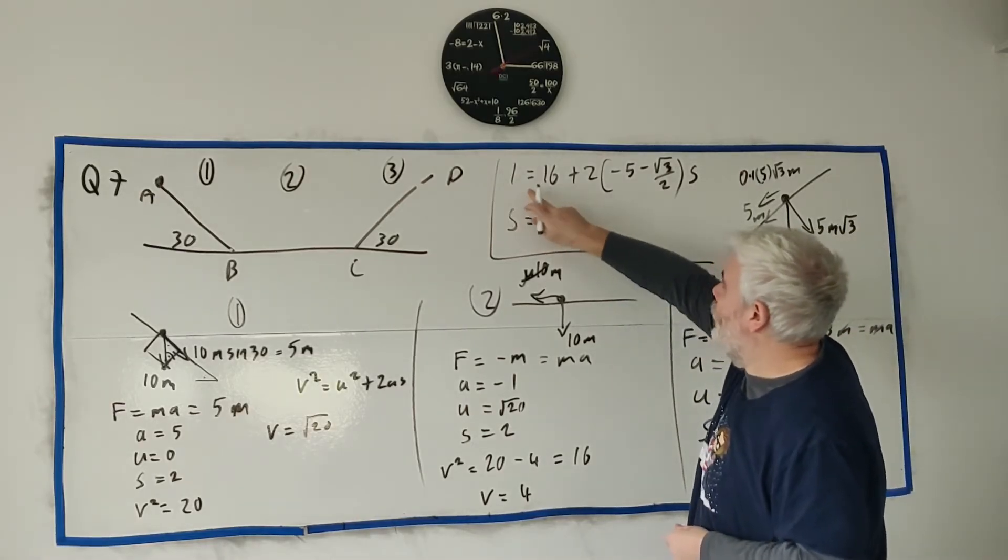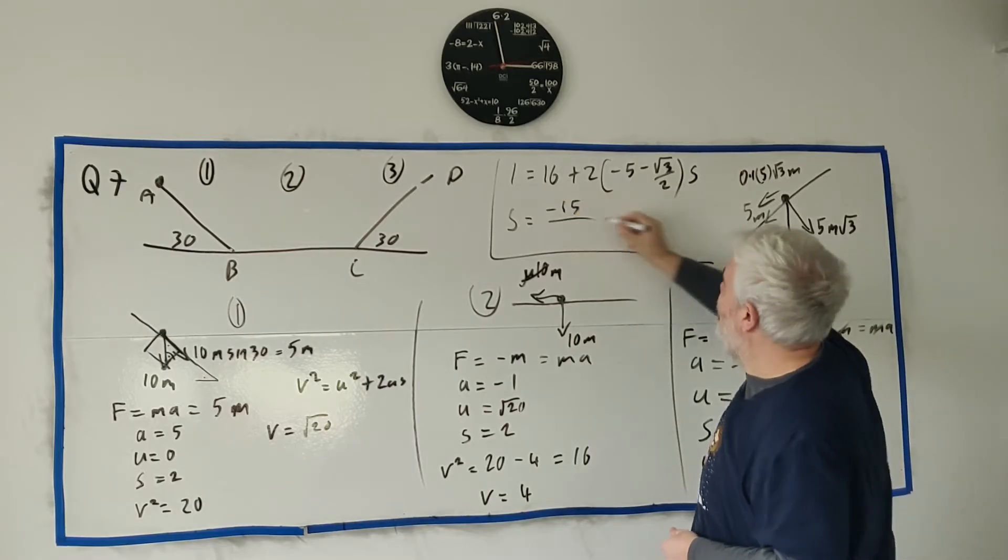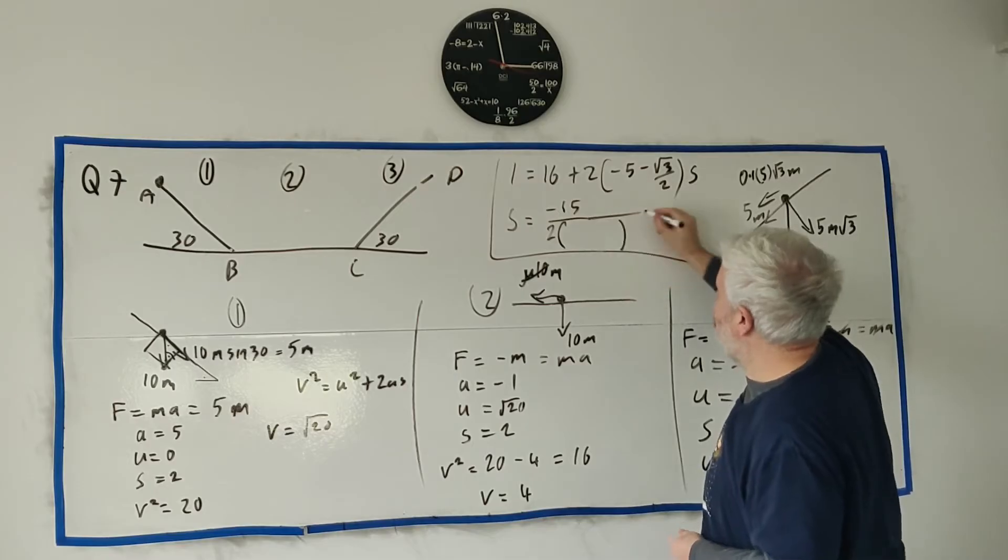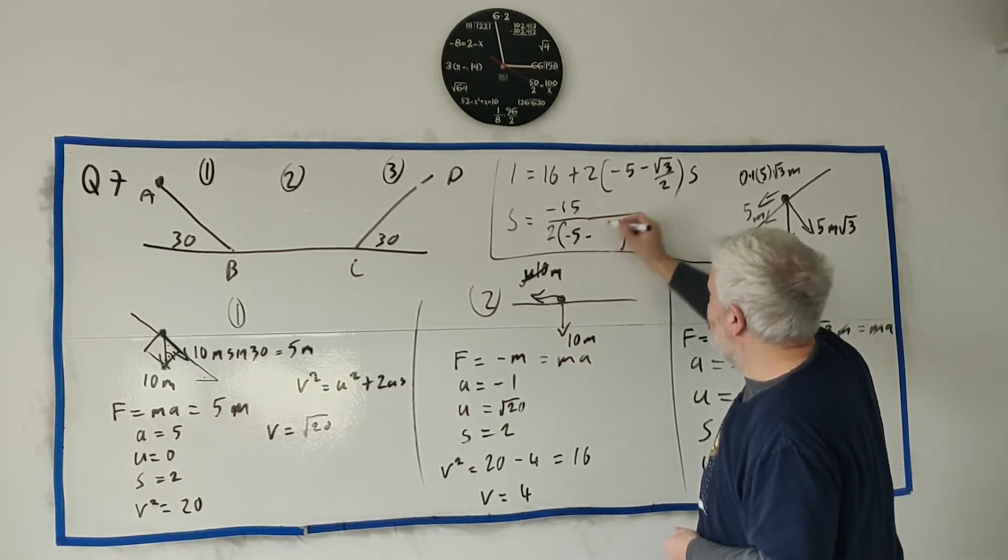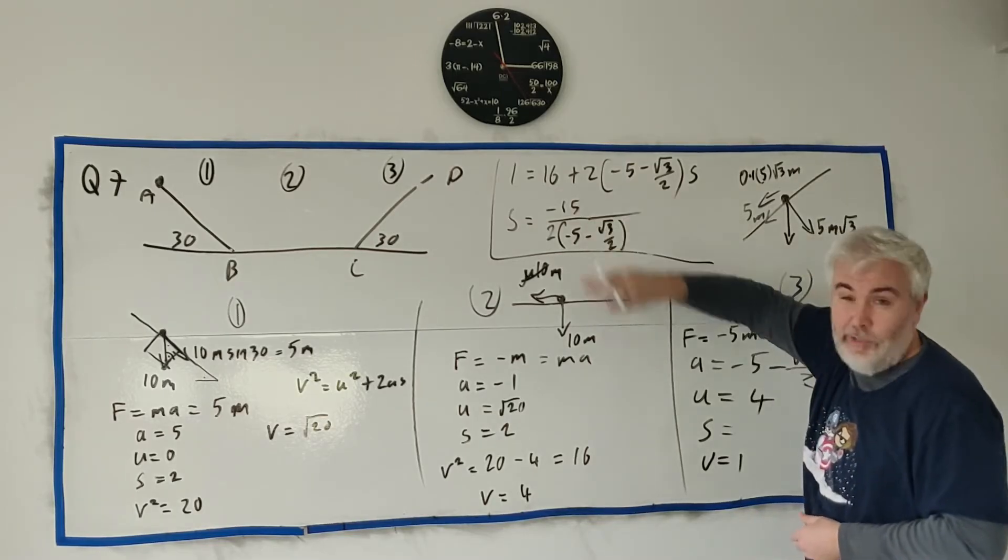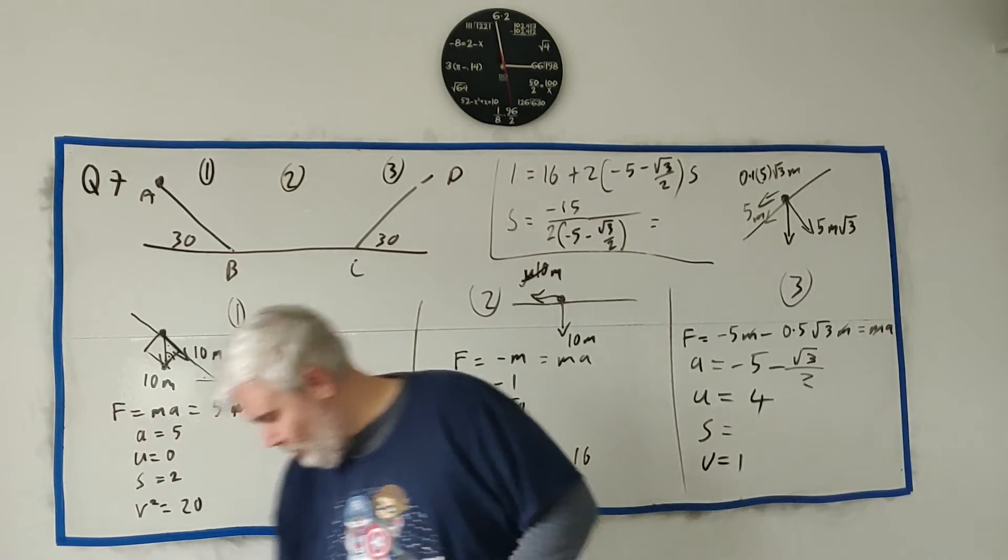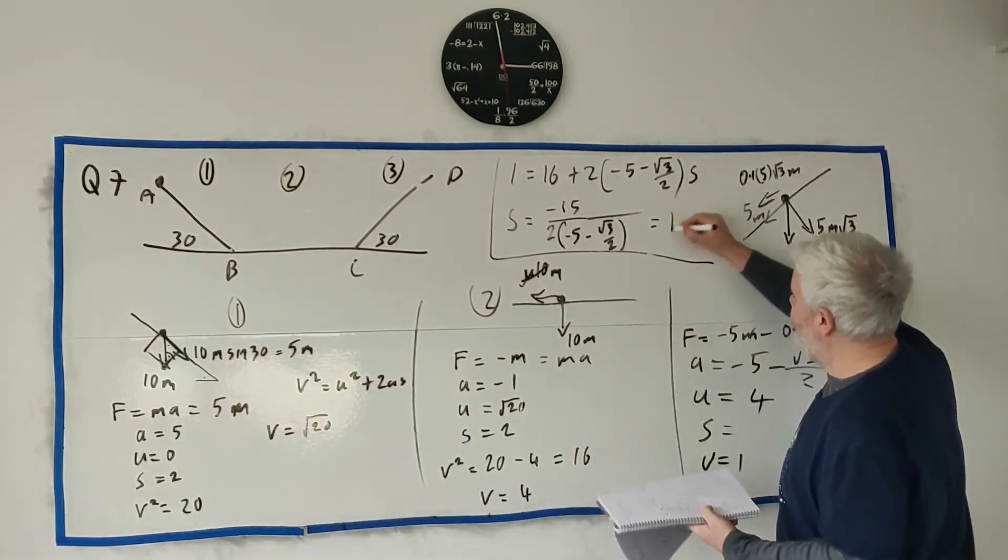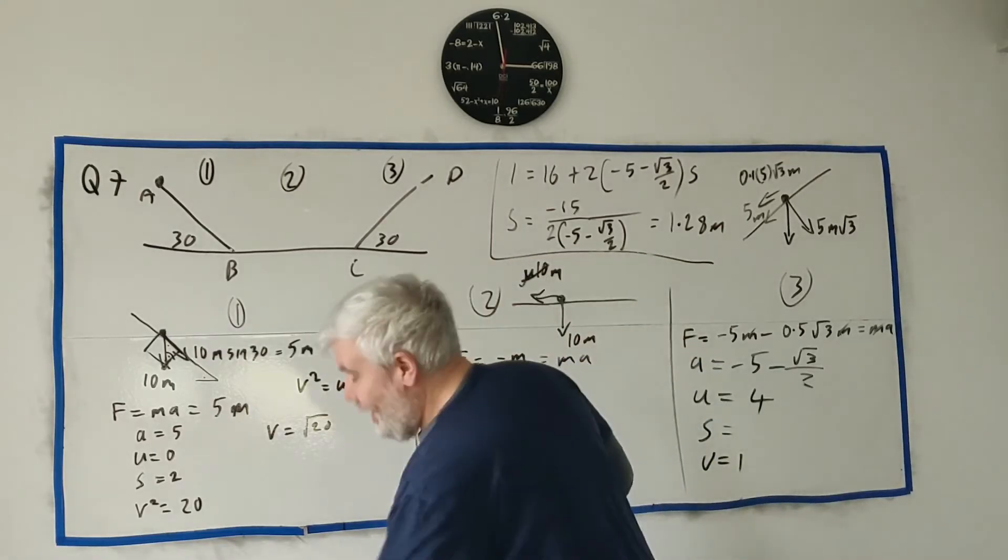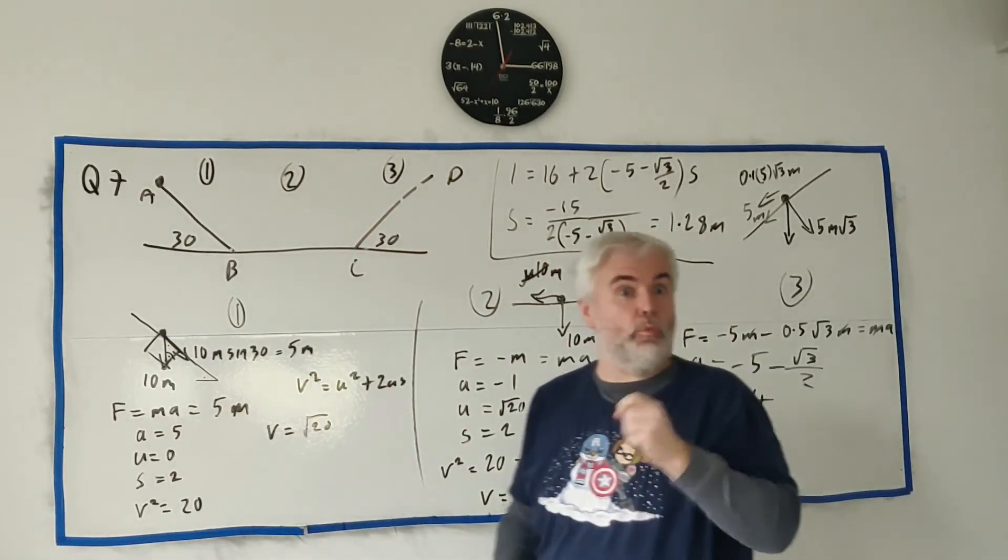We have three things and we're looking for S. The same equation we've been using all along should work fine. V squared, 1 squared equals U squared 16 plus 2 times A, so that's this mess here, minus 5 minus √3 over 2 times S. Put that in a calculator - that's just a normal number. Rearrange all that and we get S equals 1 minus 16, minus 15, divided by 2 and divided by this number. Remember all the minuses cancel. We get 1.28 meters. That's how far up this hill we would get until the speed is 1.